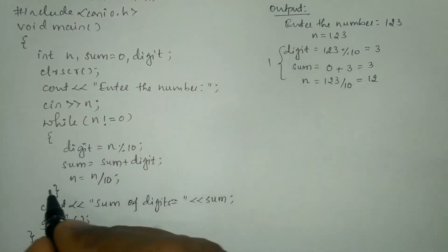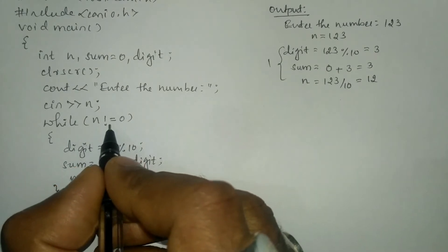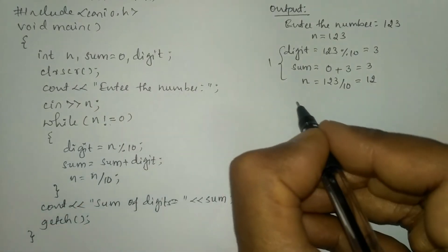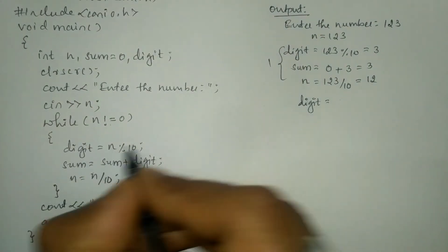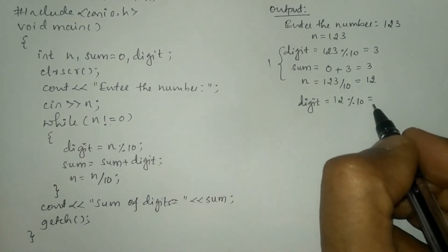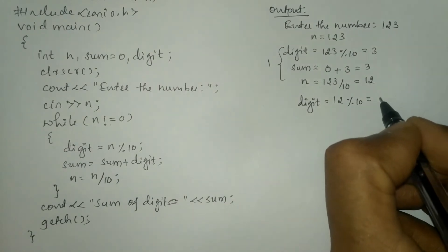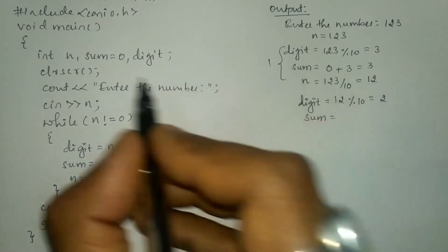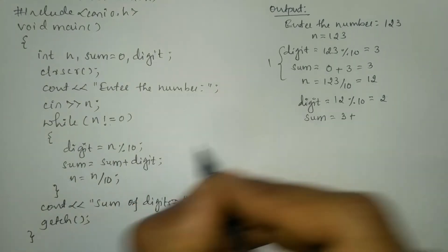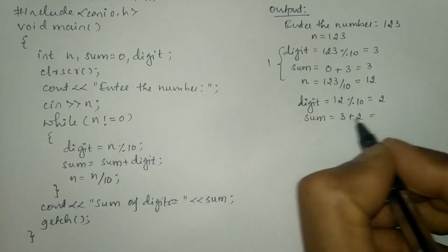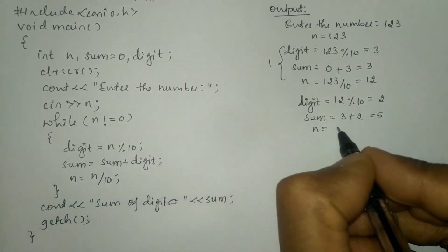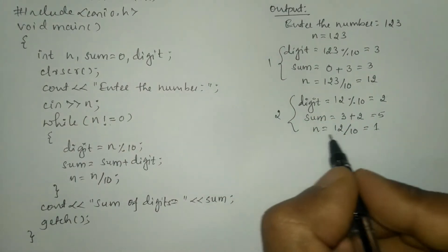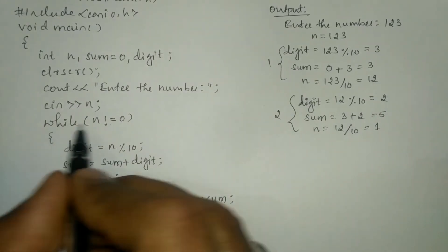Control transfers back to while to check whether n is not equal to 0. n is 12, which is not equal to 0, so once again control enters the body of the while loop and executes the three instructions. digit = 12 % 10 — modular division gives remainder 2, so 2 is stored in digit. Next, sum = sum + digit — sum was 3, digit is now 2, so 3 + 2 = 5. Next, n = 12 / 10 — integer division gives quotient 1. The second iteration is complete; n value is now 1.